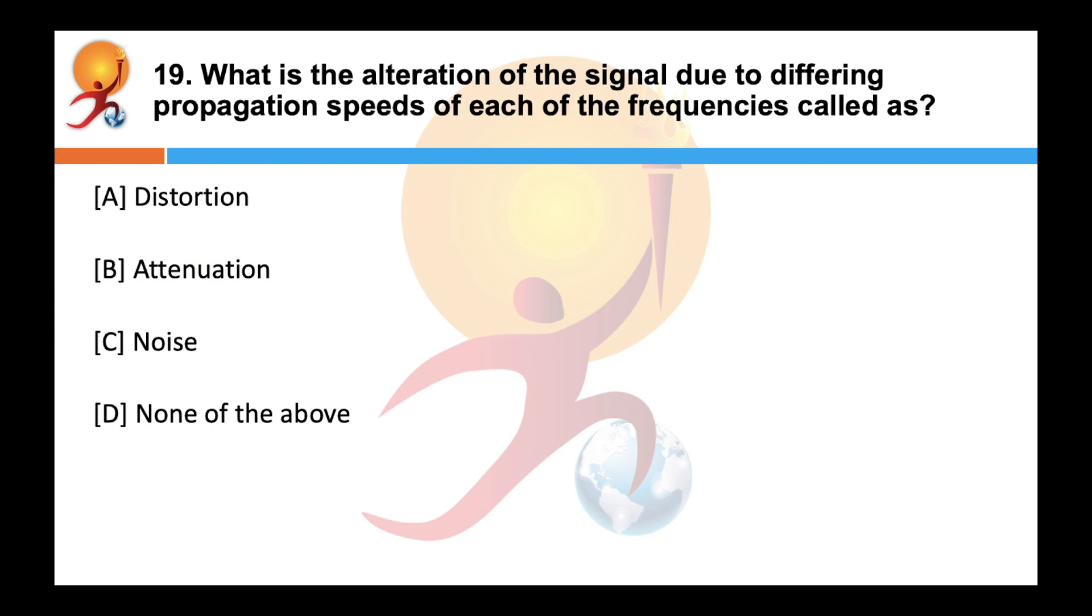What is the alteration of signal due to different propagation speeds of each of the frequencies called? We've already seen this in the previous question. Answer is distortion. It is the change in the waveform of the signal due to noise, the alteration of signal due to different propagation speeds of each frequency.